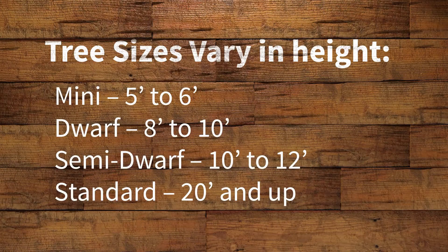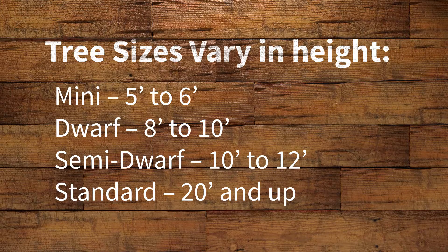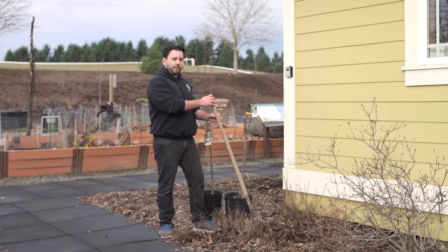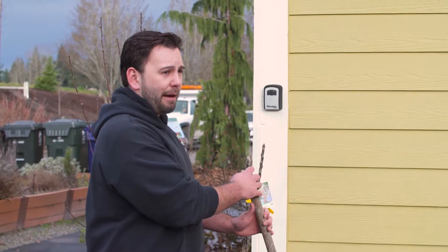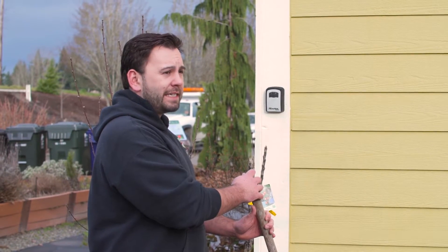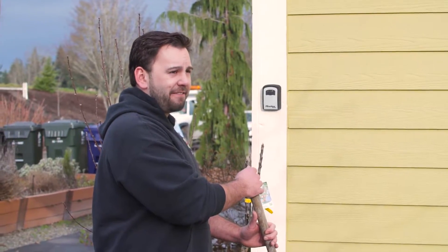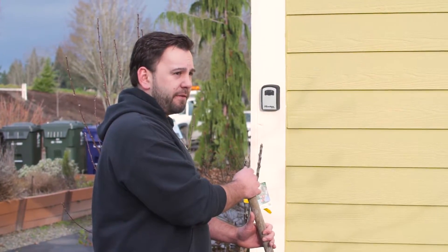You also want to look at sun exposure. Full sun is best, but half a day is minimum, and today we've chosen a beautiful spot on the southwest side of the house. We're going to make sure that it's far enough away from any structure. The tree we chose again is a columnar apple — it's going to grow 18 to 24 inches wide, so we need to be at least half that distance away from the house.